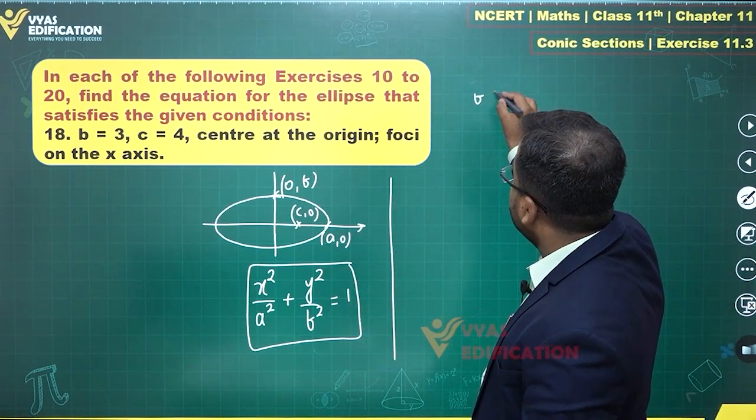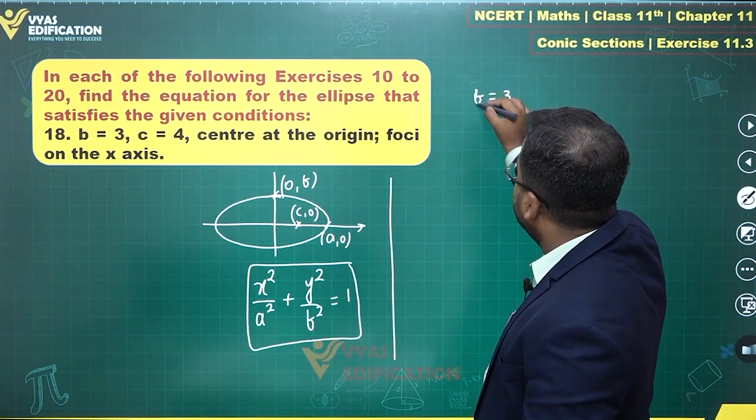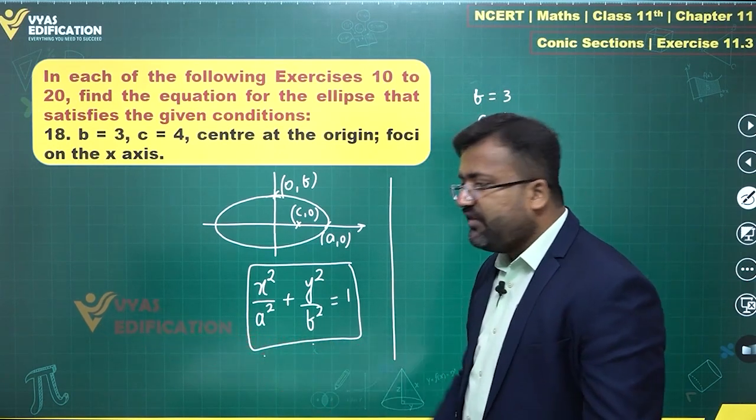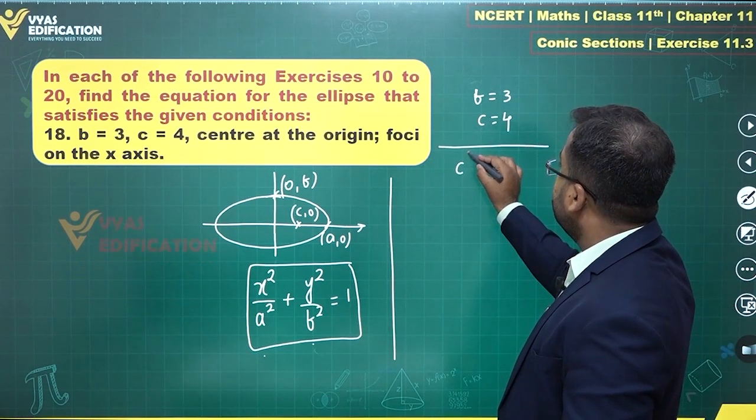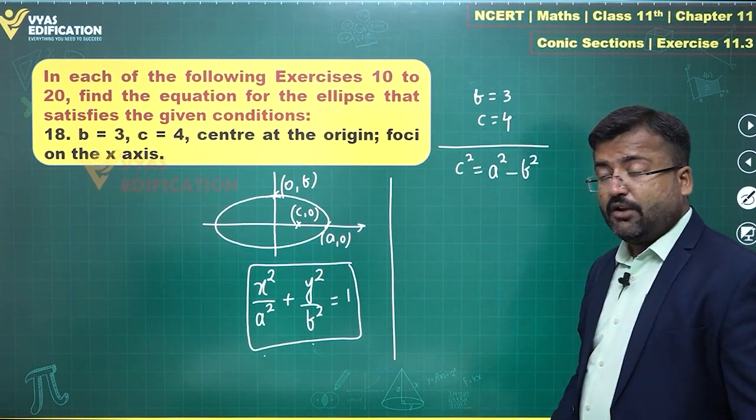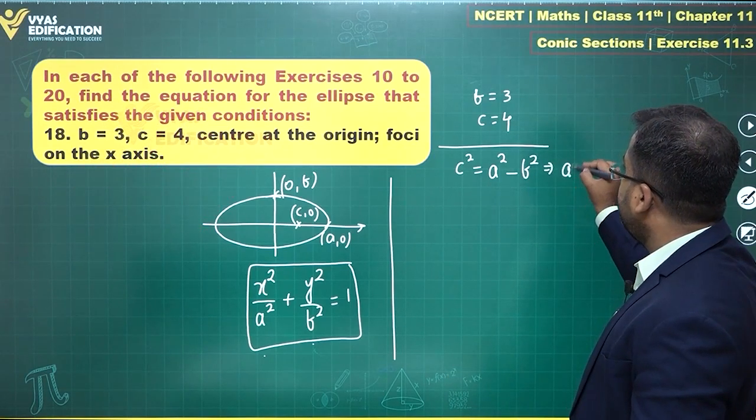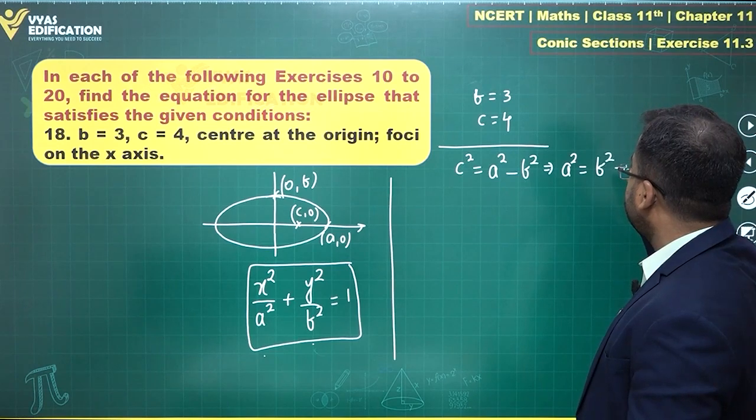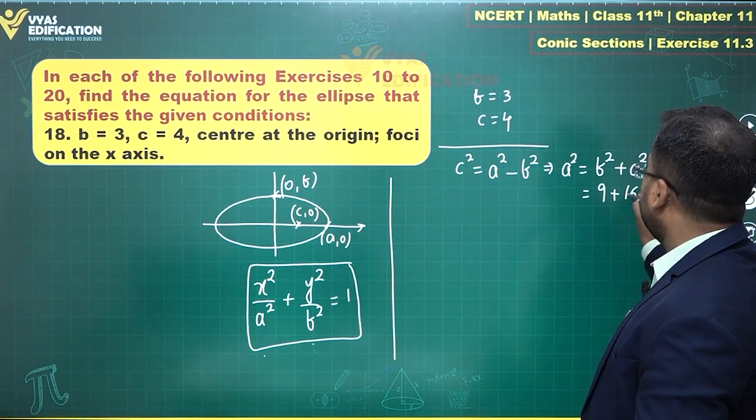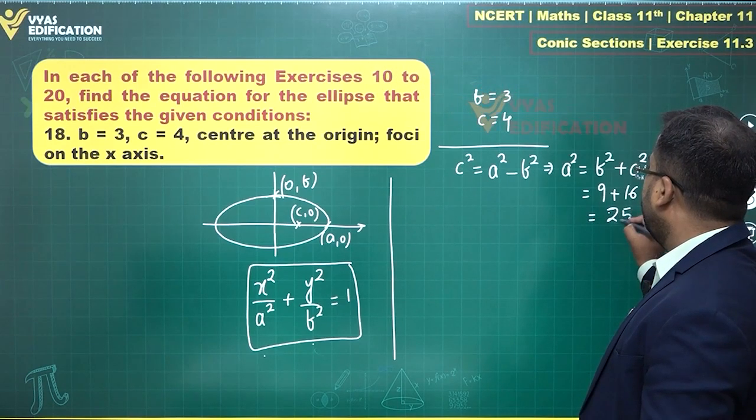We are given b but we are not given a. Can we find a? Yes, we know the relation between c square, a square, and b square. So from here I know that a square is equal to b square plus c square, what is that? 9 plus 16, which is 25.